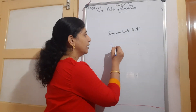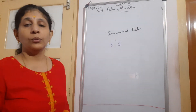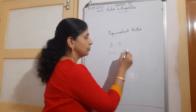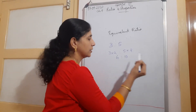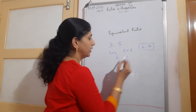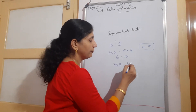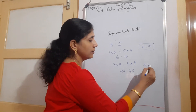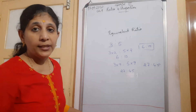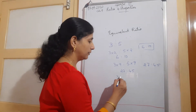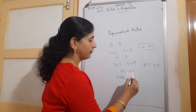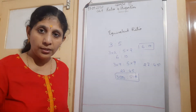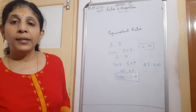Suppose 3 is to 5 - find 2 equivalent ratios. Multiply by 2: so 3 into 2 is 6, 5 into 2 is 10, giving 6 is to 10. Multiply by 9: 3 into 9 is 27, 5 into 9 is 45, giving 27 is to 45. You could also multiply by 1000 on both sides to get 3000 is to 5000. Ratio is nothing but fraction, and for equivalent ratios you multiply both terms by the same number.